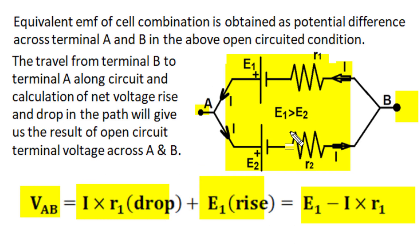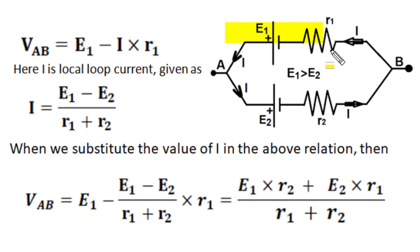The EMF of this parallel connected cell combination from B to A along the circuit path: there is a voltage drop of I times R1 and a rise of E1. The net rise is VAB, and this is our effective EMF of this parallel connected cell combination. In this local loop, net EMF is E1 minus E2, and total series resistance is R1 plus R2, so the current is given by the ratio of E1 minus E2 to R1 plus R2.